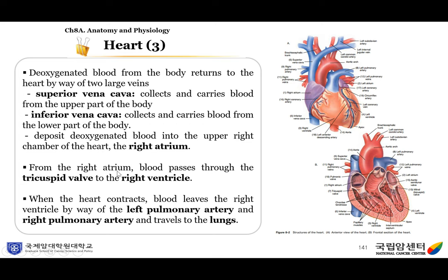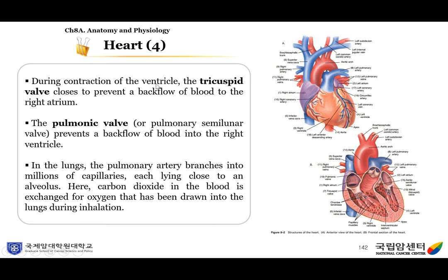From the right atrium, blood passes through the tricuspid valve to the right ventricle. When the heart contracts, blood leaves the right ventricle by way of the left and right pulmonary arteries and travels to the lung. During contraction of the ventricle, the tricuspid valve closes to prevent backflow of blood to the right atrium. The pulmonary semilunar valve prevents backflow of blood into the right ventricle.